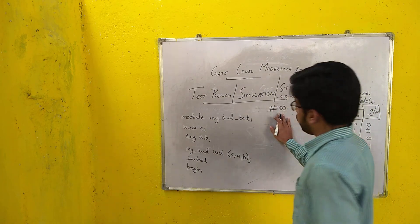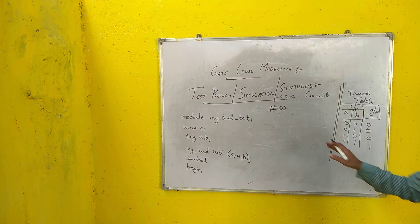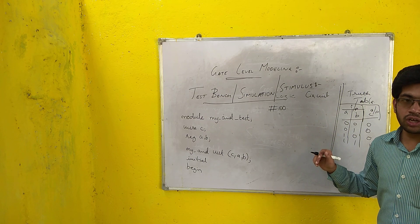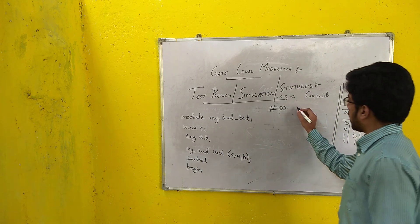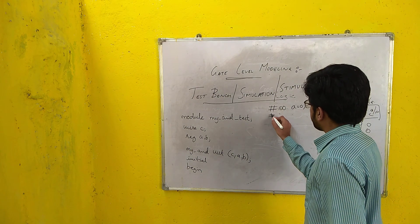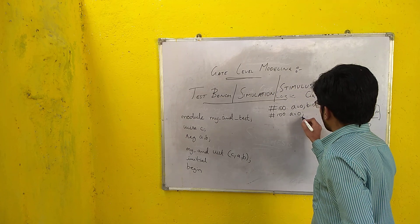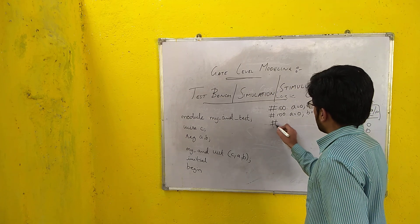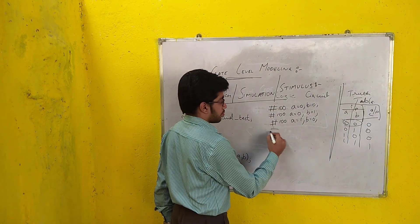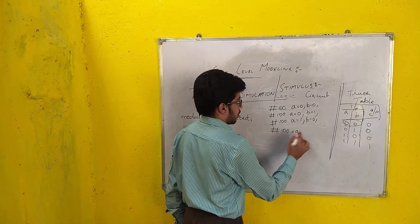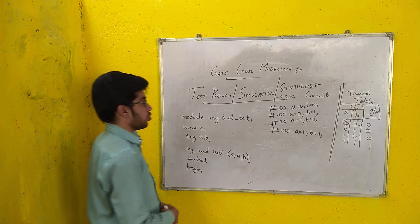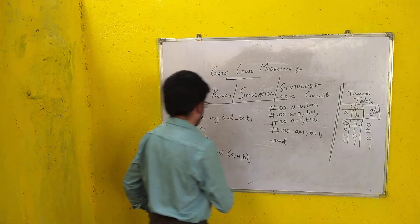#100 — this shows a delay of 100 nanoseconds. The reason for providing this delay is that in practical circuits a delay is observed, so to maintain that practicality in simulation we include this delay. So: #100 A=0, B=0. Then #100 A=1, B=1. Then #100 A=1, B=0. Whenever you use an initial or begin statement, it is necessary to use an end statement. And to end the module, write endmodule.